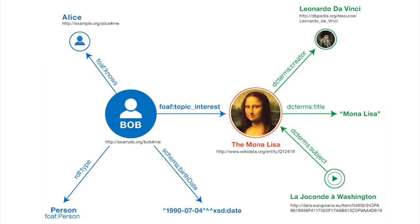RDF is the underlying data model of the Semantic Web. This is an image from the RDF primer, the standard document that describes RDF, giving a very simple example of how the underlying data model looks. We see different nodes: a person Bob, and the Mona Lisa piece of art. They are two nodes in this Semantic Network, and between those two nodes there is an edge representing the relationship of Bob being interested in the Mona Lisa.